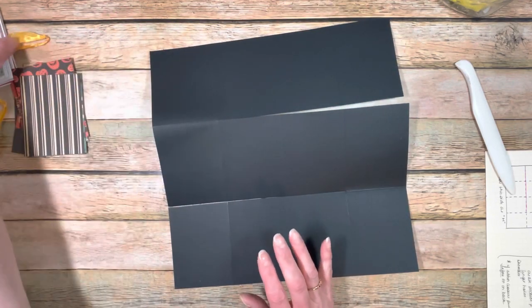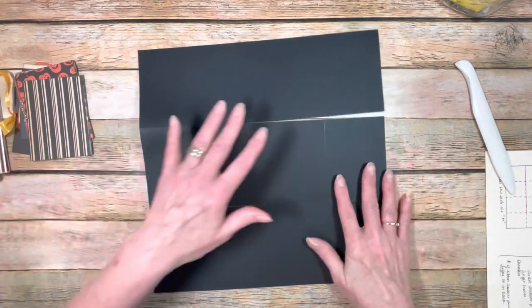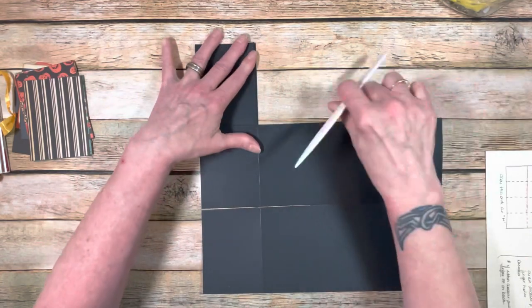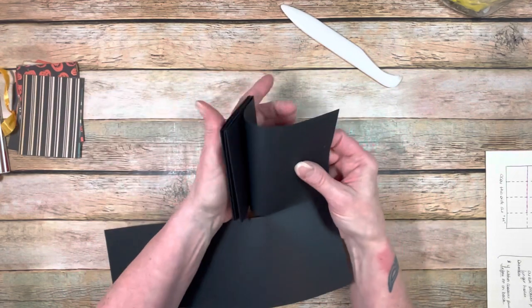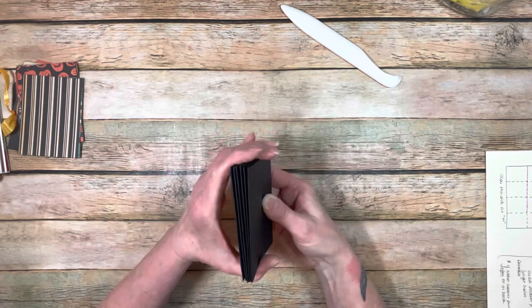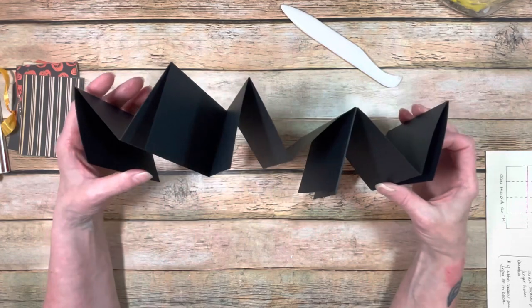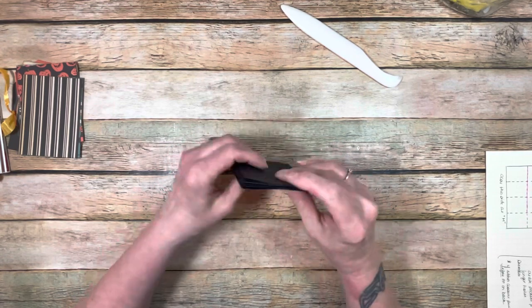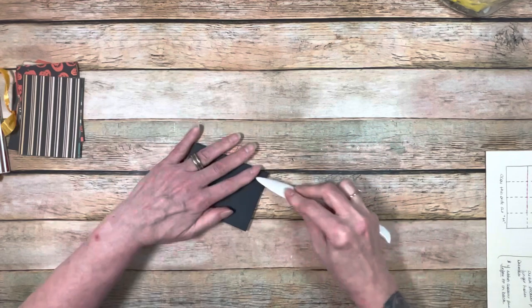Then basically all you're going to do is start folding this thing together to make a book. I'm going to start at the top and I'm going to fold like this, and then like that, and then like that. Just accordion it all together, and then go down and then back, forward, back, go down, back, forward, back. So now you should have this kind of weird configuration that looks like this. I'm going to grab my bone folder and kind of square it up a little bit.